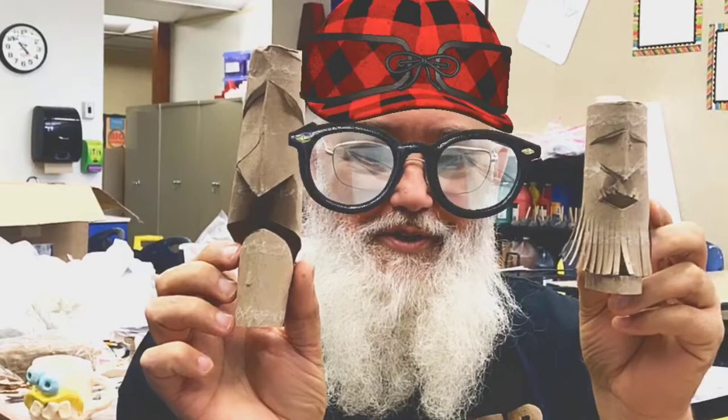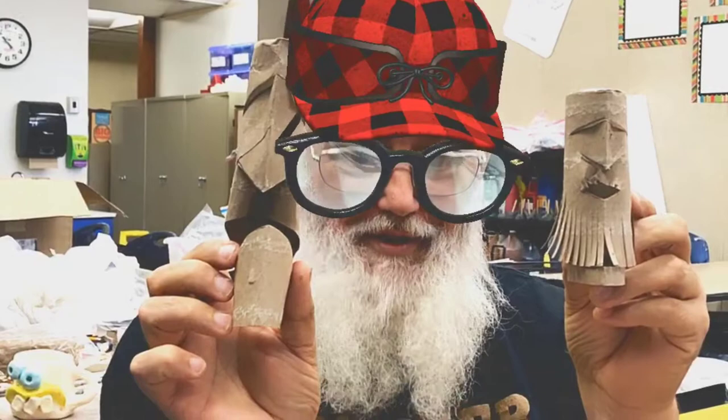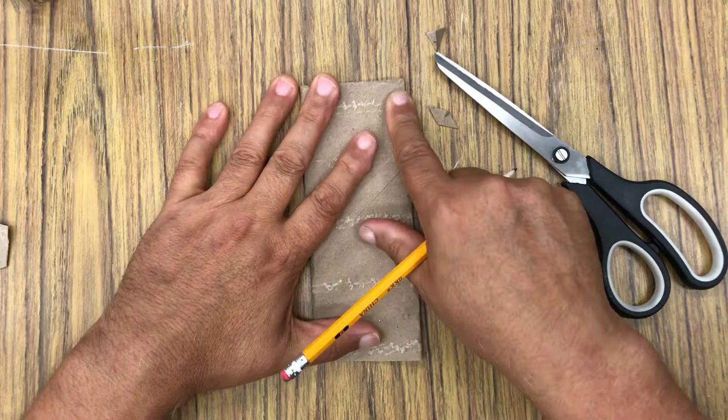Hey everybody, this is Mr. Cox. This video shows you how to make totem pole paper towel roll faces. Okay, so all you need is scissors, pencil, and one of these. Be careful with the scissors. Now for those who are just starting out, this is gonna be really simple.